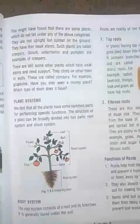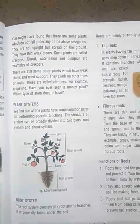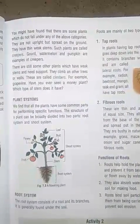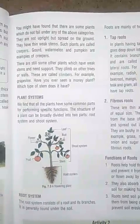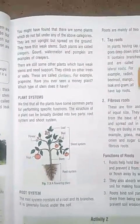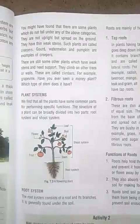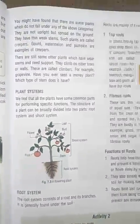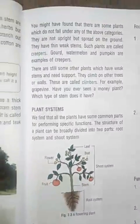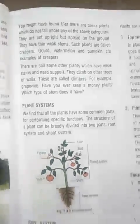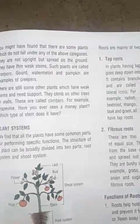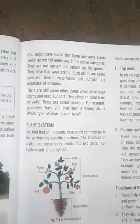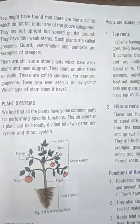Next are creepers. A creeper is a plant that does not grow upright but spreads on the ground. They have thin weak stems. Such plants are called creepers. Examples include watermelon, pumpkin, and gourd. Next are climbers. Climbers are plants which have weak stems and need support to grow.